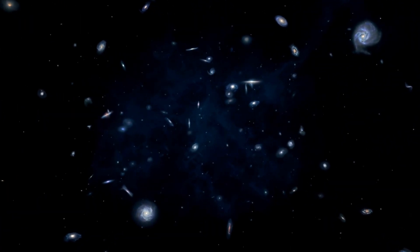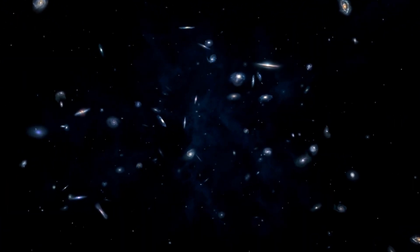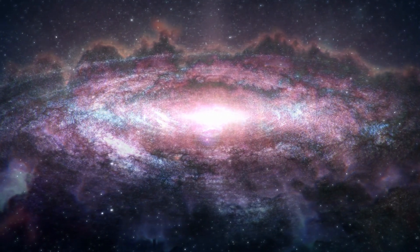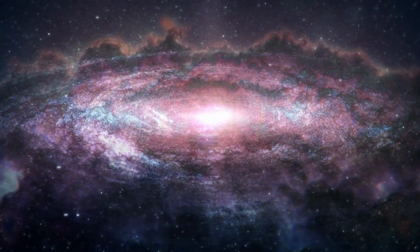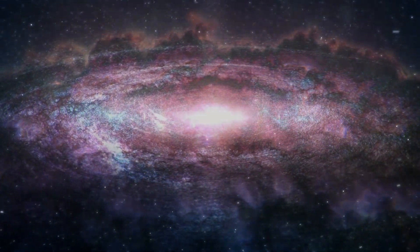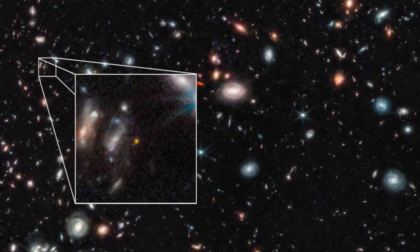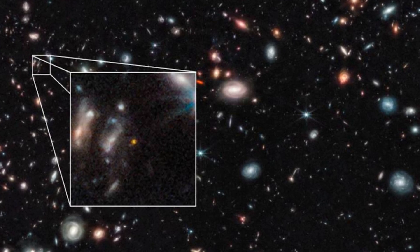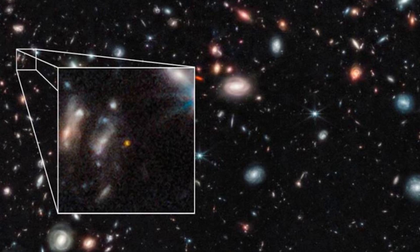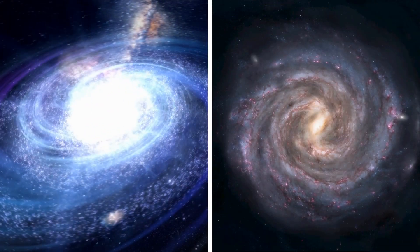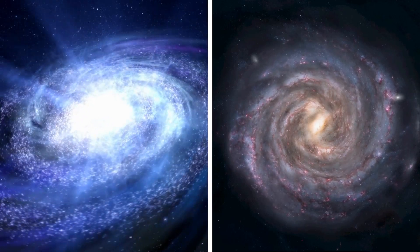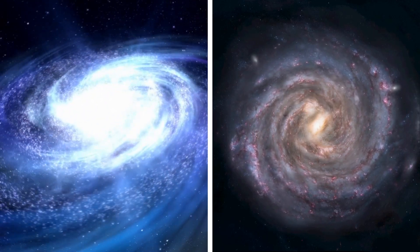Moreover, the smoothness of these galaxies is totally unexpected. According to the Big Bang theory, galaxies should show irregularities and variations in their structures due to the dynamics of their formation and evolution. However, the images reveal unusually smooth galaxies without the level of complexity and roughness that one would normally expect to see in galaxies of their age. This defies the expected time sequence for the formation and evolution of galaxies within the framework of the Big Bang theory.